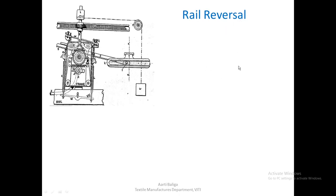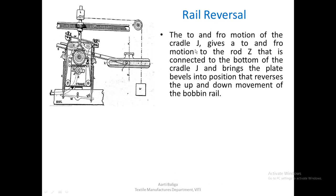How does the reversal take place? The building mechanism is responsible for rail reversal. In the to-and-from motion of cradle W — which oscillates in both anti-clockwise and clockwise directions — this oscillation is used to give motion to rod Z, which is a sort of tail attachment to cradle J.